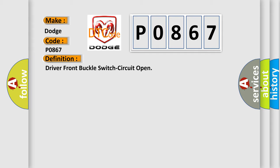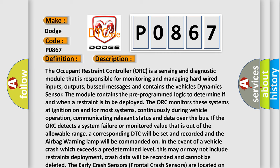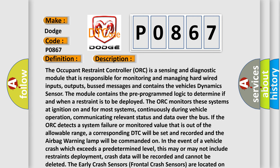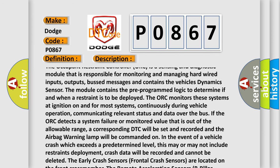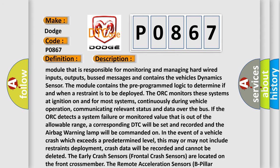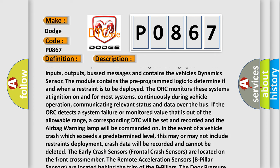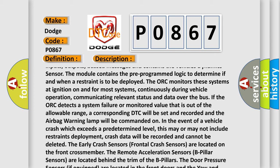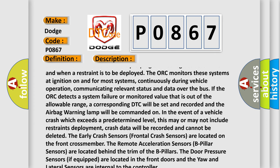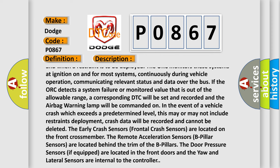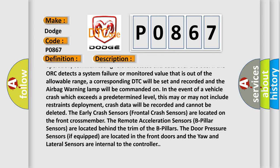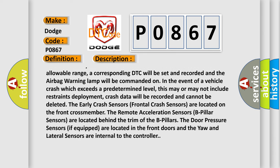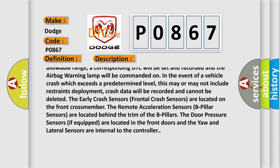Here is a short description of this DTC code. The Occupant Restraint Controller (ORC) is a sensing and diagnostic module responsible for monitoring and managing hardwired inputs, outputs, bus messages, and contains the vehicle's dynamic sensor. The module contains pre-programmed logic to determine if and when a restraint is to be deployed. The ORC monitors these systems at ignition on and, for most systems, continuously during vehicle operation, communicating relevant status and data over the bus. If the ORC detects a system failure or a monitored value out of the allowable range, a corresponding DTC will be set, the airbag warning lamp will be commanded on, and in the event of a vehicle crash exceeding a predetermined level, restraints deployment may occur. Crash data will be recorded and cannot be deleted.